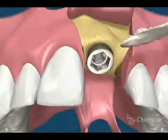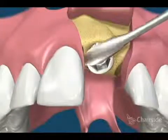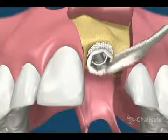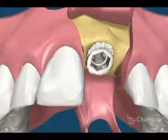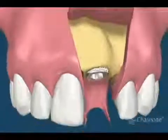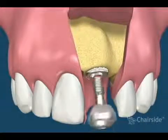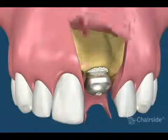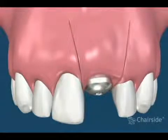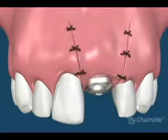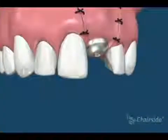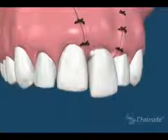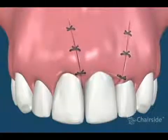Note that there is a small void between the tooth socket and the implant fixture. Bone or bone substitute from various sources can be placed in the void. The implant is covered with a healing cap, and the gums are repositioned and sutured into place.